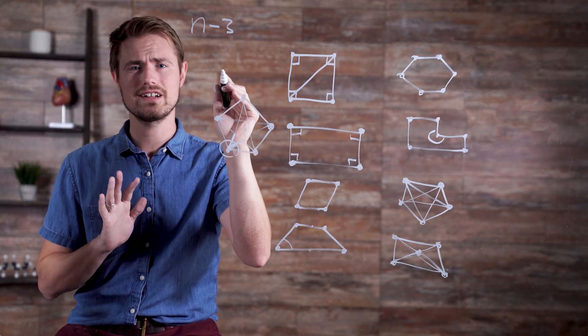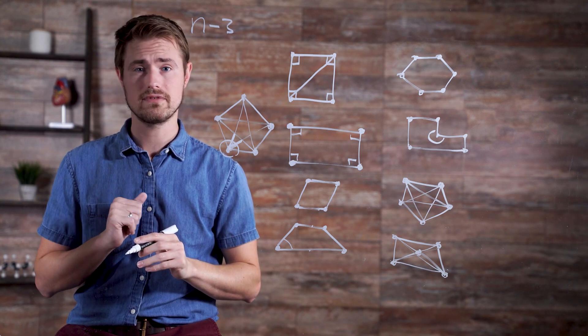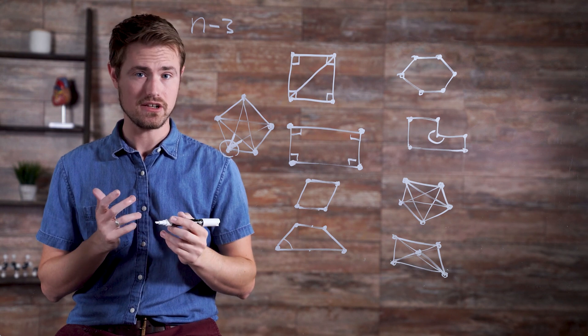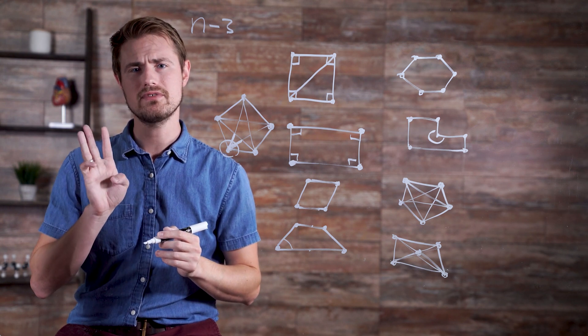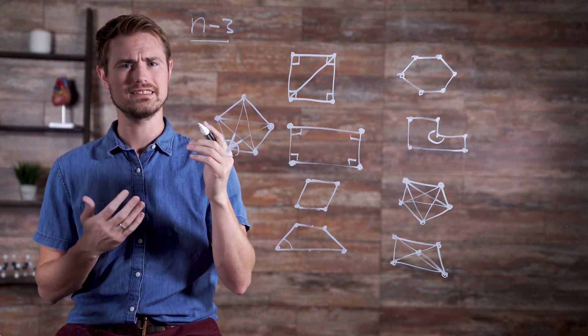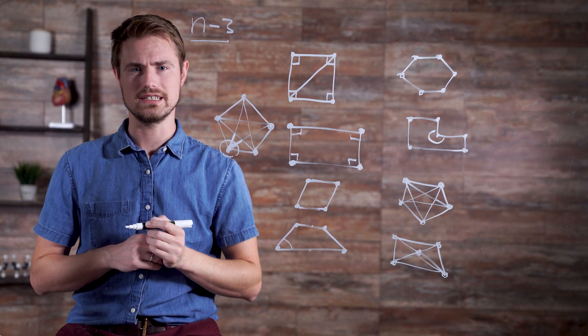The number three is not arbitrary here. From any vertex, diagonals cannot connect to the vertex itself or to the vertices that they are one away from because it would be edges. That makes three vertices from every vertex that aren't included. To generalize this, we'll use n minus three, where n is the number of vertices of the polygon.